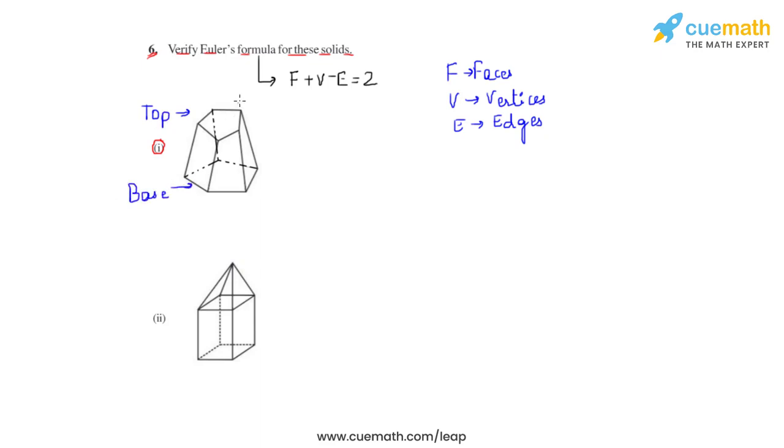If they are pentagon, we can state that the number of faces for this solid would be 7. As we observe, the top would be 1, the bottom or the base would be 1, and since this is a pentagon, we will have 5 faces at this lateral part. So a total of 7 faces would be there in this solid.